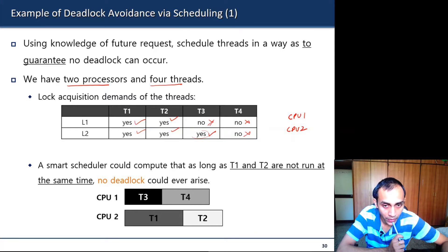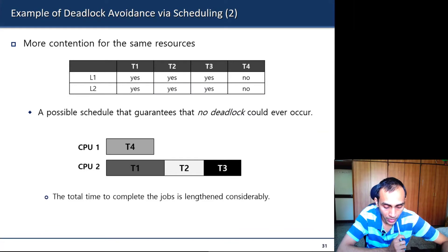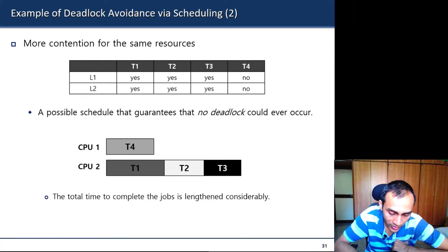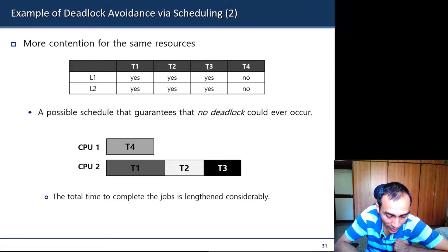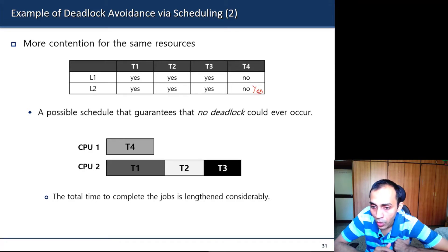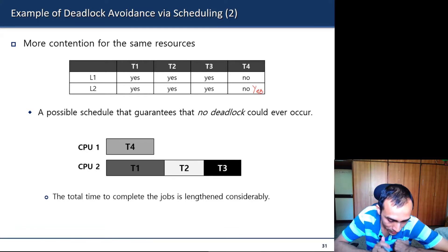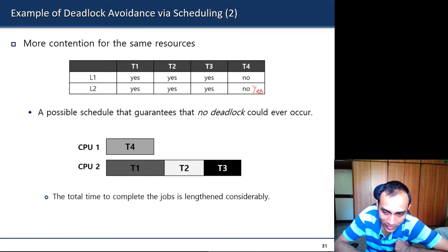If T3 also needs lock L1, then T1, T2, and T3 all need both locks and all can potentially deadlock. A question arises: how do we get this a priori knowledge? Unfortunately, in general we cannot get that knowledge, so the practical utility is low.